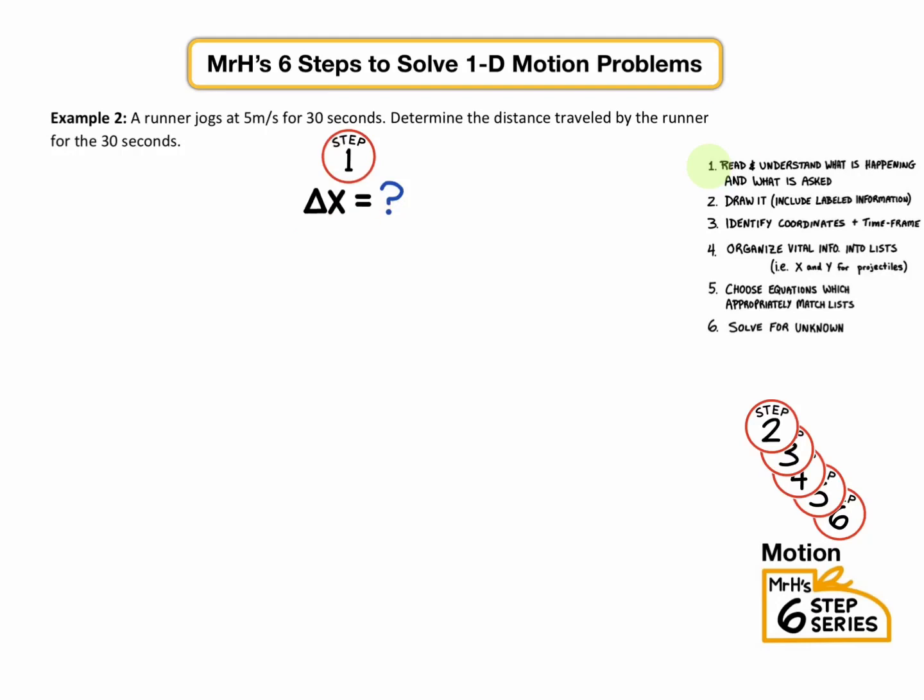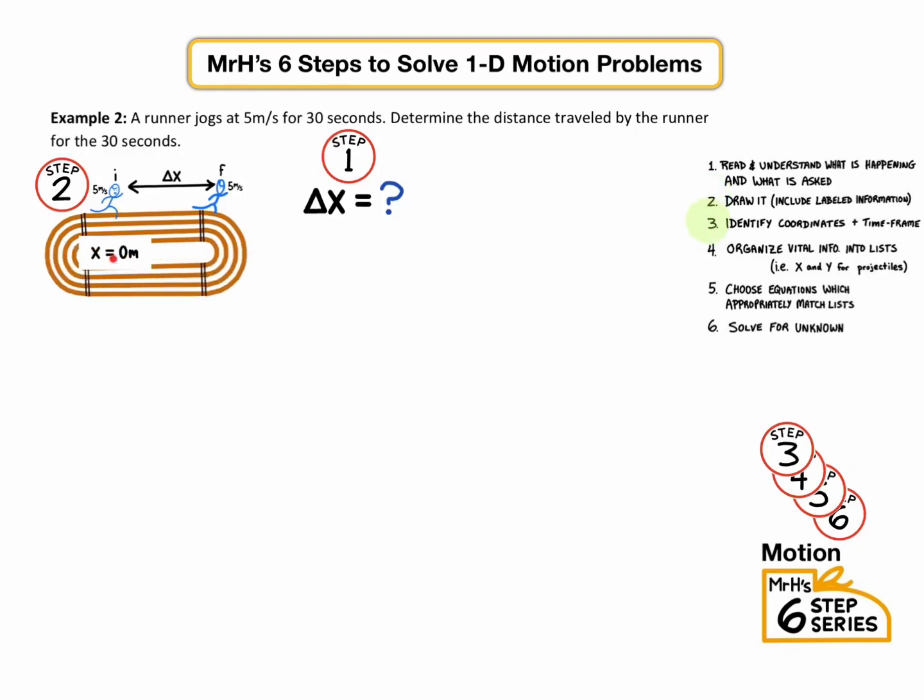So step one, done. We have a symbol. We have a question mark. Step two, draw a picture of a runner. So the runner starts at five meters per second, and they go forward sometime later, still have five meters per second. Let's label our picture with information. And while we're at it, we can do step three. We can identify coordinates. We can put x equals zero at the beginning, put a little I at the top, and an F for the final position.